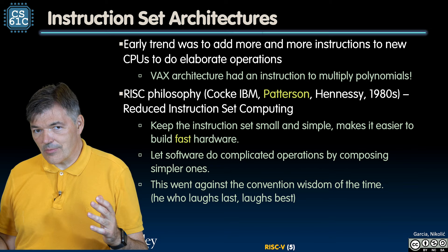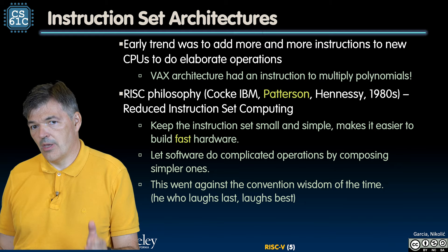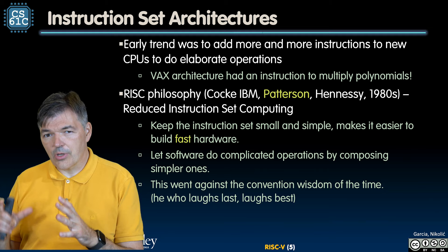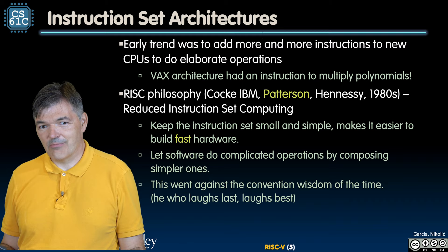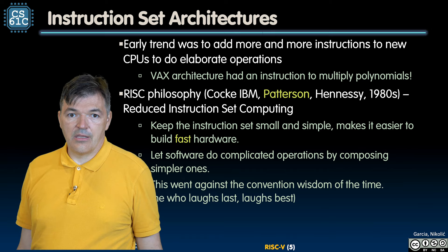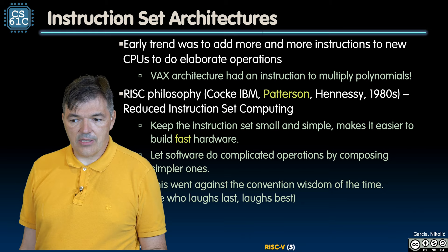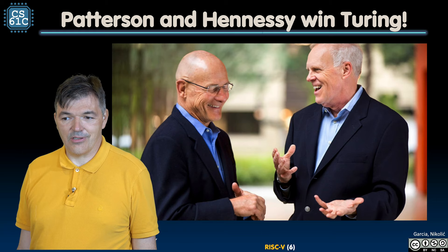Patterson and Hennessy won. There was a long debate, but they eventually won. And even though there are CISC instructions like x86, if you look at the way the processor is built, at its essence it is a RISC engine, and complex instructions are handled by concatenating simpler ones inside the machine. As they say, he who laughs last laughs best — Patterson and Hennessy won the Turing Award two years ago.